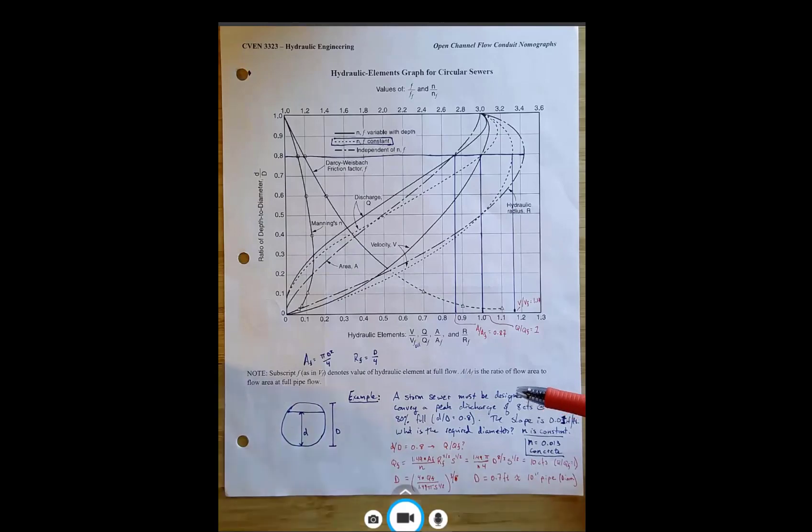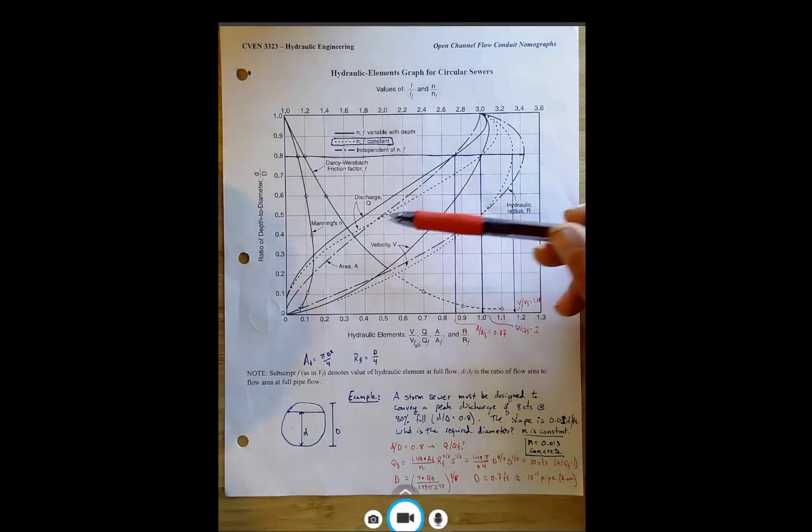So what we got here is a bunch of different curves, and each curve represents some value, either Q over QF, velocity over velocity F, where F is the full pipe, hydraulic radius over hydraulic radius F.